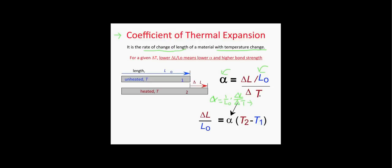Looking at the equation, we can see how this could become a calculus problem — dL/dT. However, in an intro materials class, we assume that dL/dT is linear. We also assume we're working with solids, because if we were not, we'd have to incorporate pressure into the equation, which is less applicable to materials science. So in an intro materials class, you'll probably use the simplified linear equation more often, and be given four values while solving for the fifth.